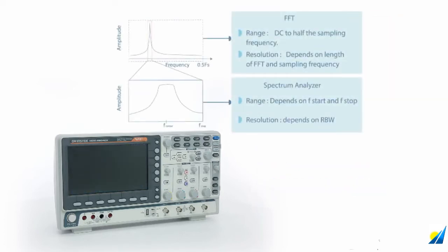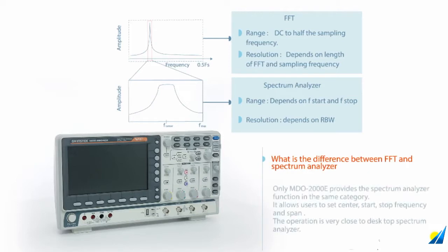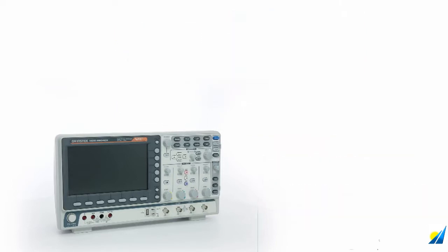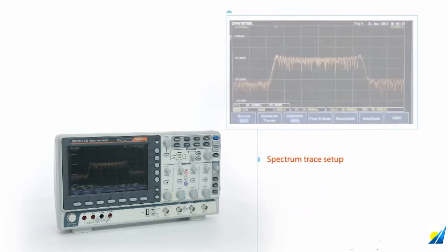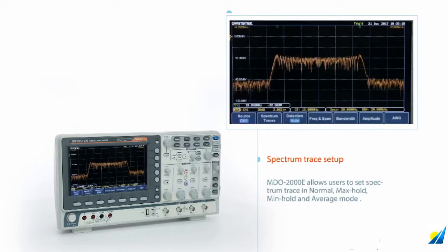Conventional DSO's FFT always calculates the entire signal bandwidth up to half the sampling rate. This series allows users to analyze the frequency domain of interest. The MDO-2000E allows users to set spectrum trace in normal, maximum hold, minimum hold, and average mode.